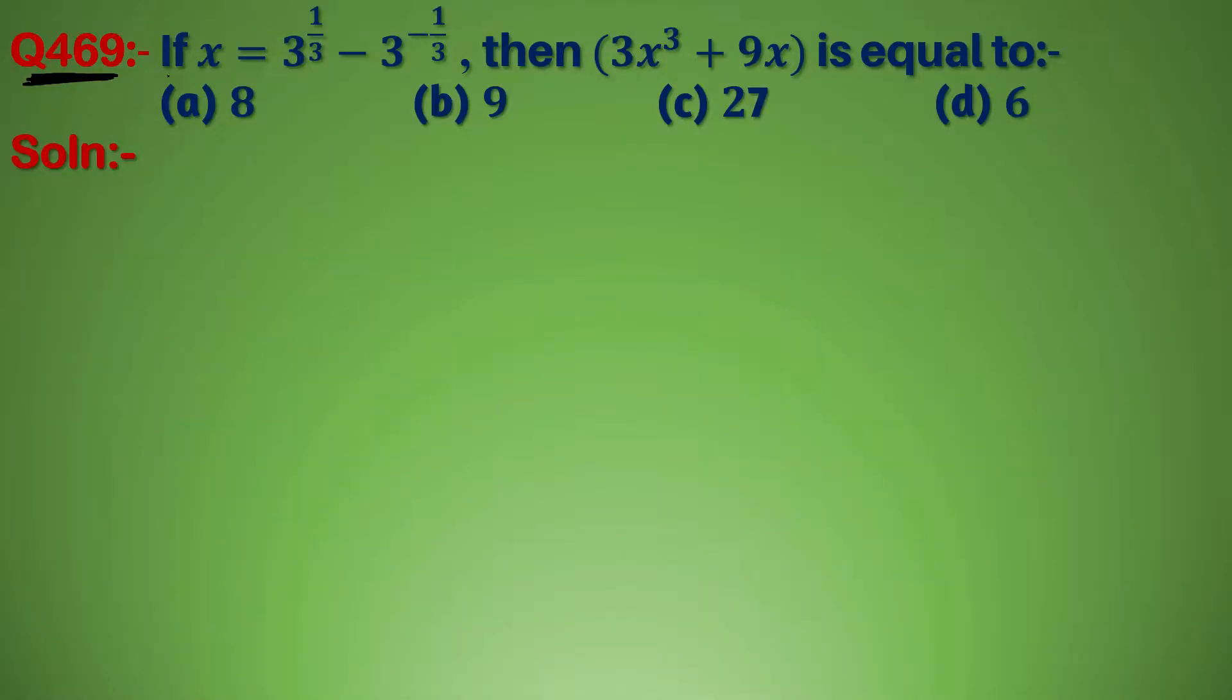Question number 469: If x equal to 3 to the power 1 by 3 minus 3 to the power minus 1 by 3, then 3x cube plus 9x is equal to. Given hai x equal to 3 to the power 1 by 3 minus 3 to the power minus 1 by 3, और हम इसकी value find करना है.